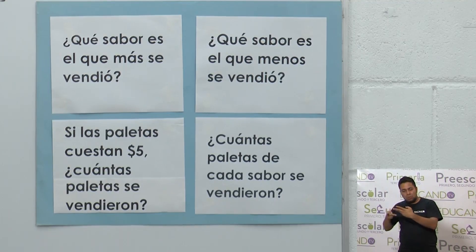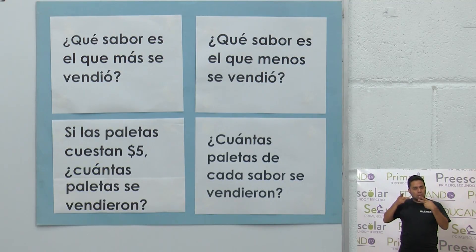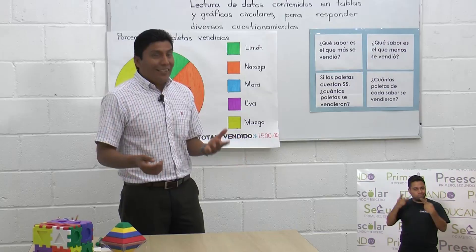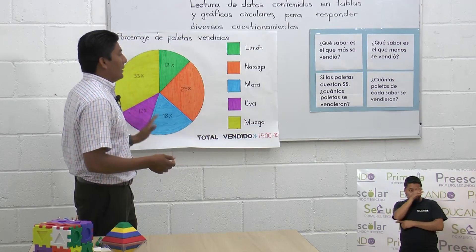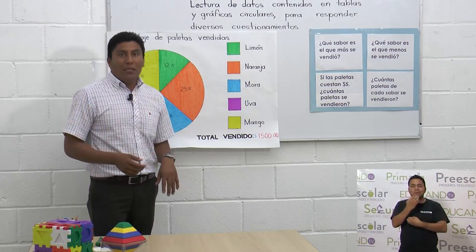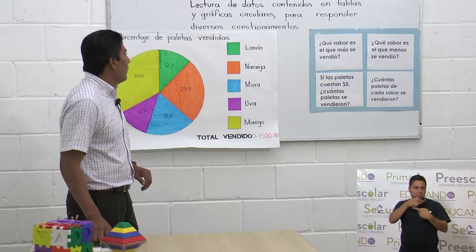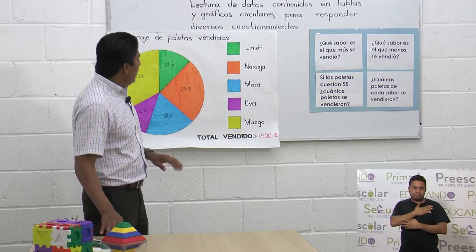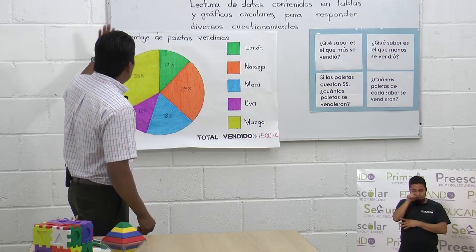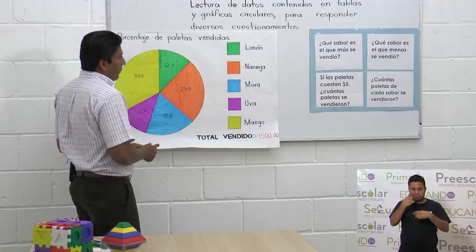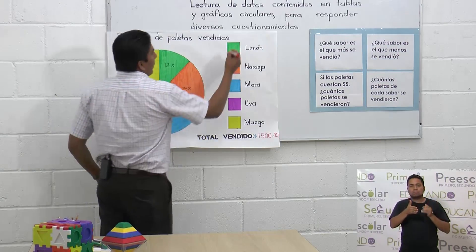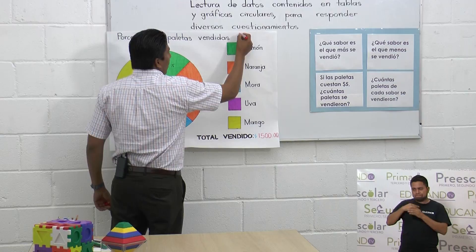La tercera pregunta: si las paletas cuestan $5, ¿cuántas paletas se vendieron? Y la última pregunta: ¿cuántas paletas de cada sabor se vendieron? Para esto tenemos que saber primero cuántas paletas son en total, y de ahí analizar la gráfica para saber cuántas se vendieron de cada sabor. Sabemos que se trata de paletas vendidas durante una semana.